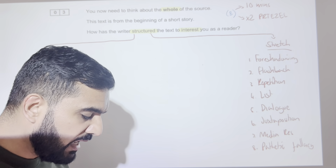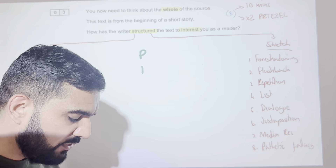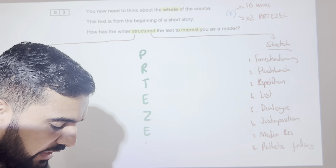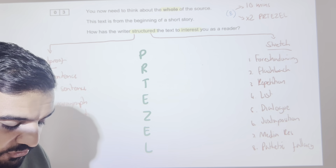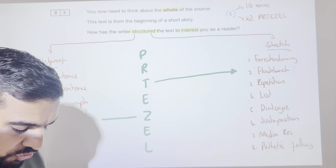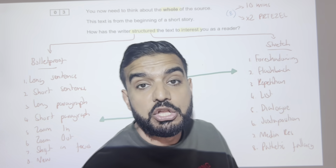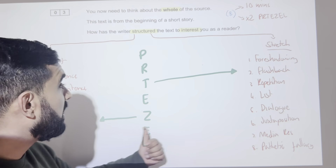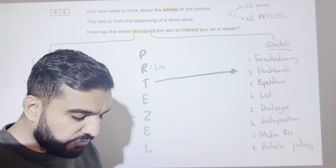All of this is wrapped up using a pretzel paragraph. We start with a Point, then give our Reference, then pick our Technique, then Explain the effect, then Zoom in, Explain the effect again, and Link everything back together. My rule is: for your first technique, try to pick something from the bulletproof list, and when you zoom in try to pick something from the stretch list. Two from the bulletproof side is absolutely fine though.